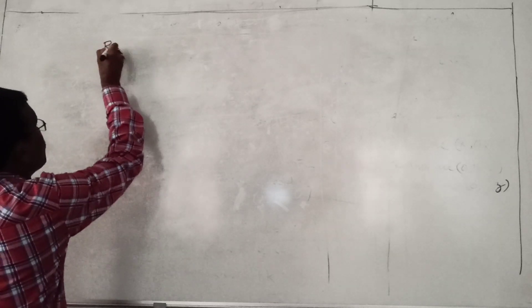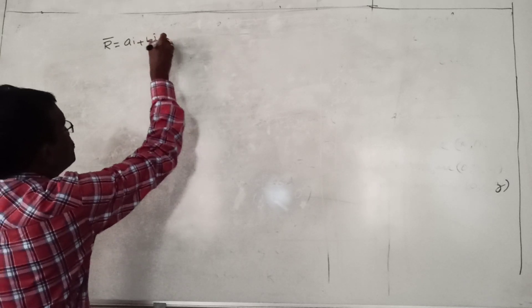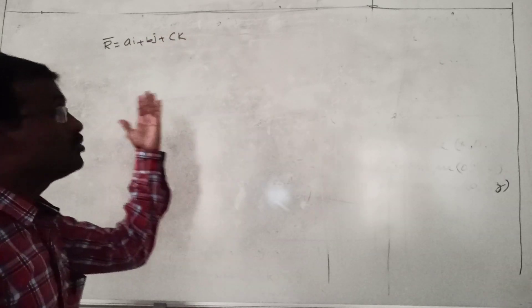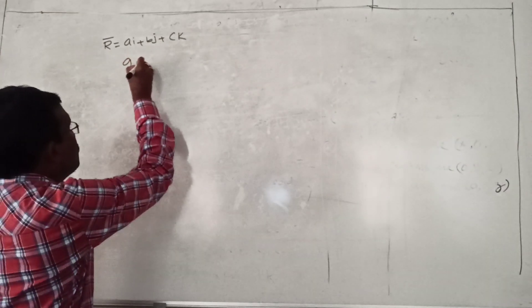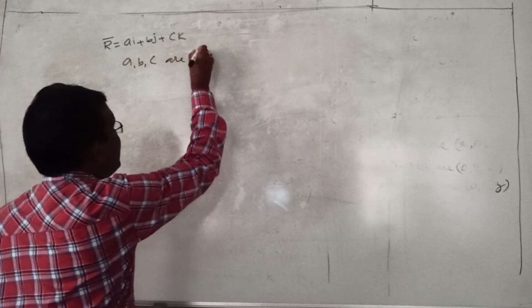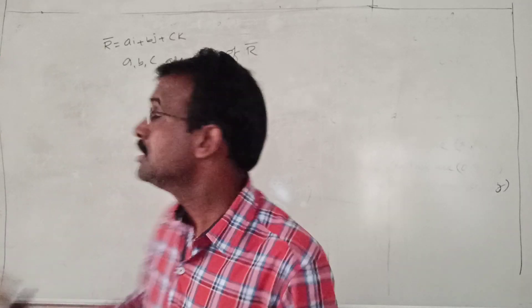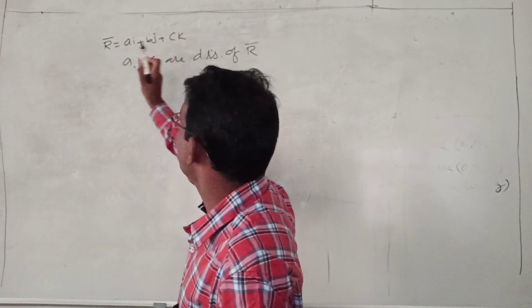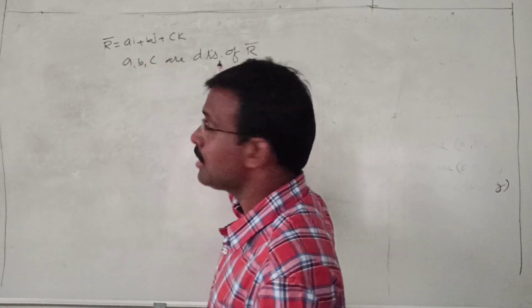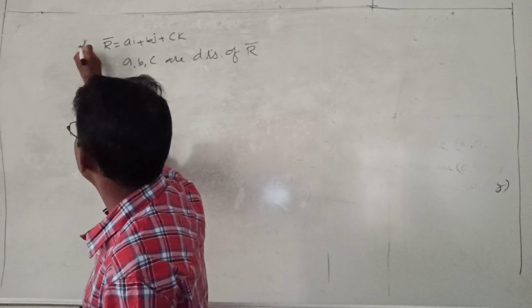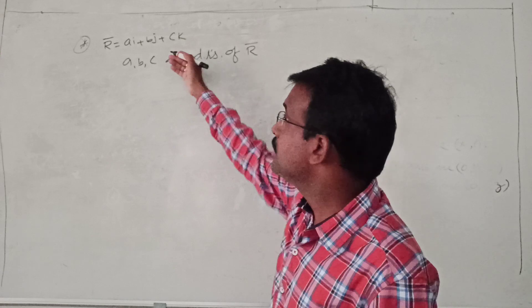Let us check one vector r-bar defined as a·i plus b·j plus c·k. If r-bar is a vector defined as a·i plus b·j plus c·k, then a, b, c are the direction ratios of r-bar. The direction ratios of this vector are simply the coefficients of i, j, k — that is a, b, c. If you take any vector, you can define its direction ratios using this concept.